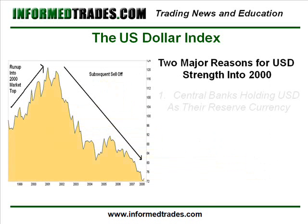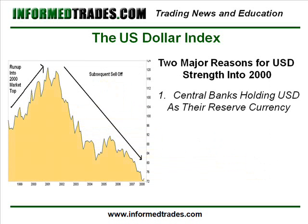I'm making some pretty significant generalizations here for simplicity's sake, but there are two major reasons that fundamental traders will point to. Number one is that — and this is starting to change somewhat — there has for many years been a strong demand for U.S. dollars because the U.S. dollar is the currency of choice for many major central banks to hold as their reserve currency. Japan and China are the biggest examples of this. This creates a demand for dollars on the capital flow side of the equation that helped to offset the persistent current account deficit going into 2000.